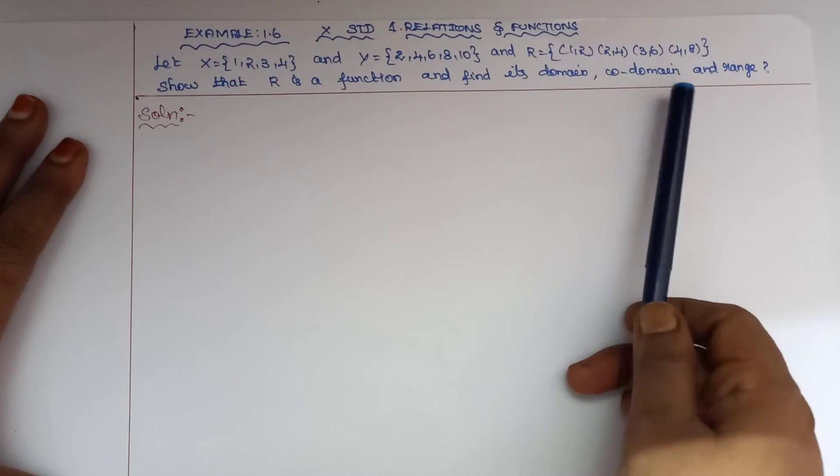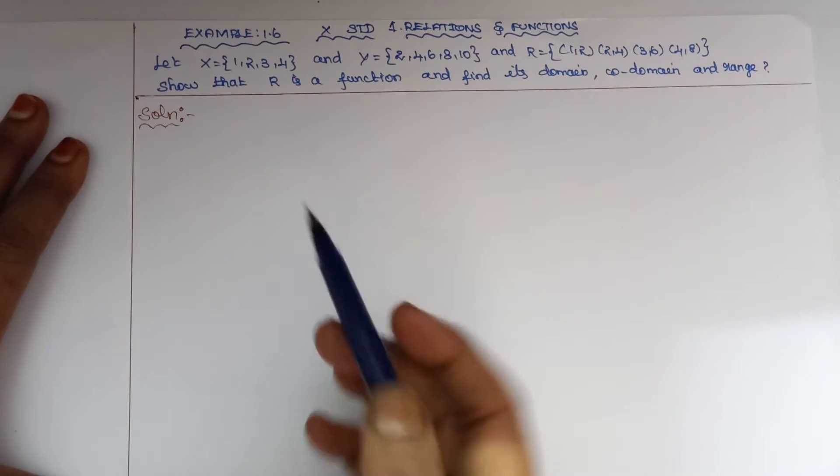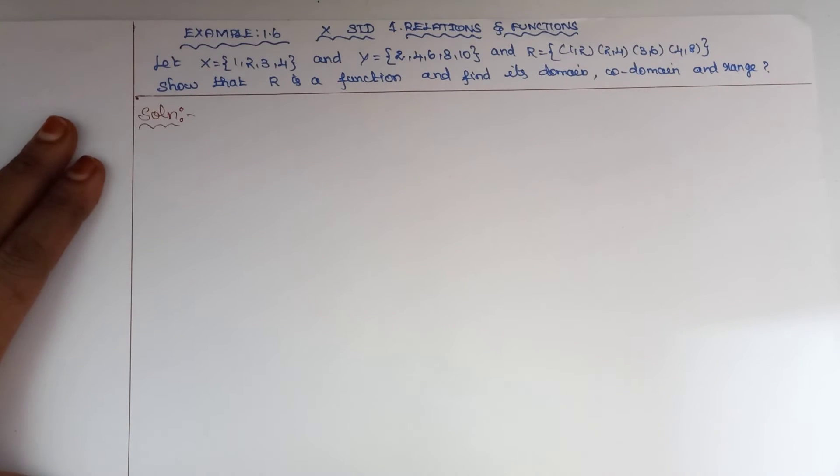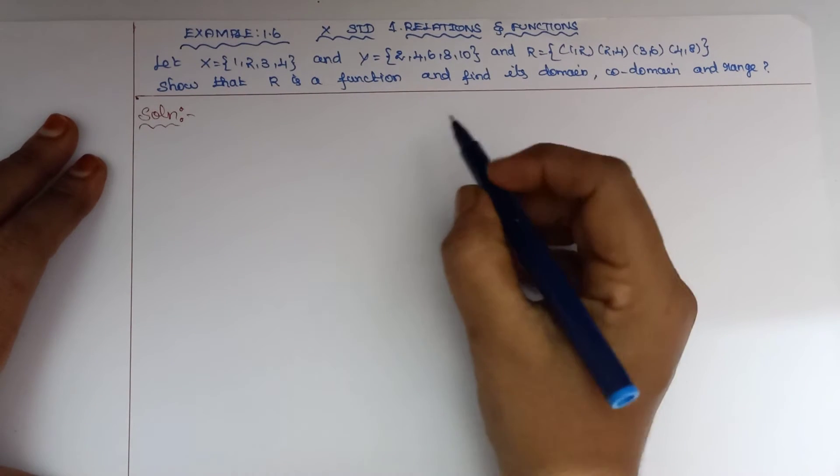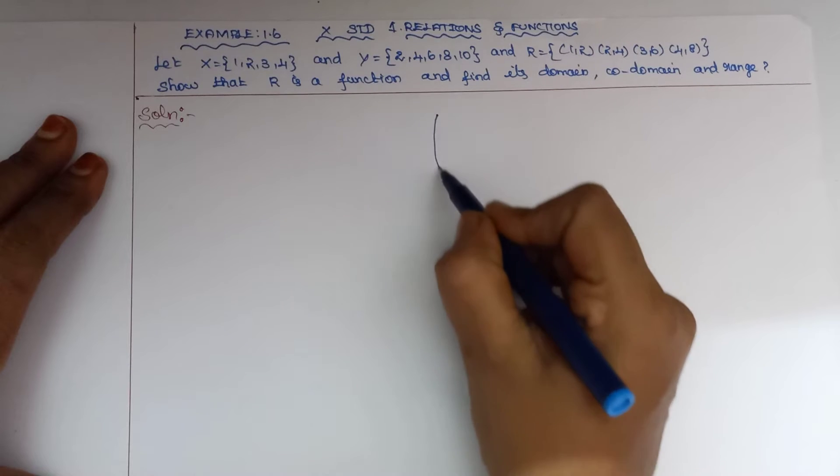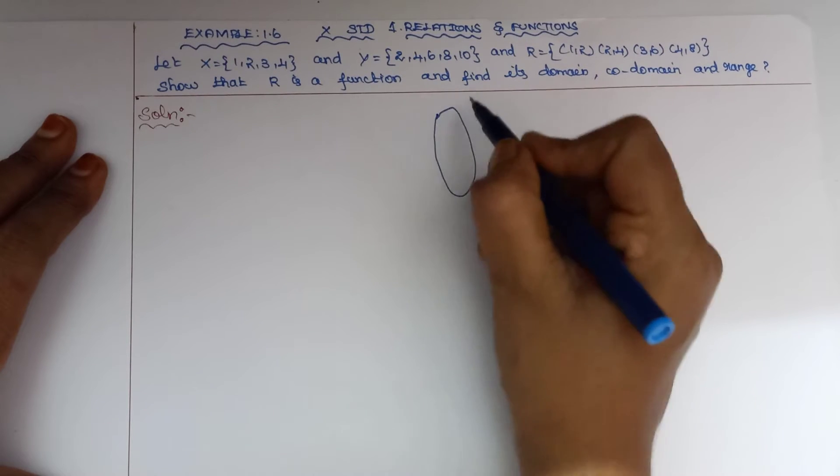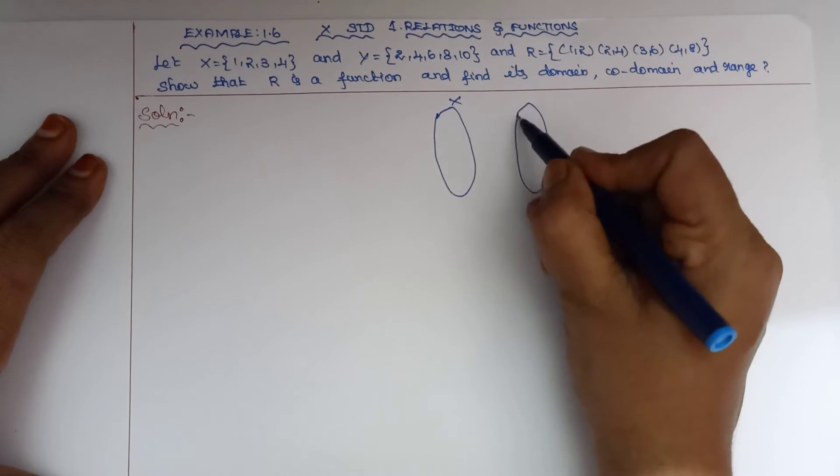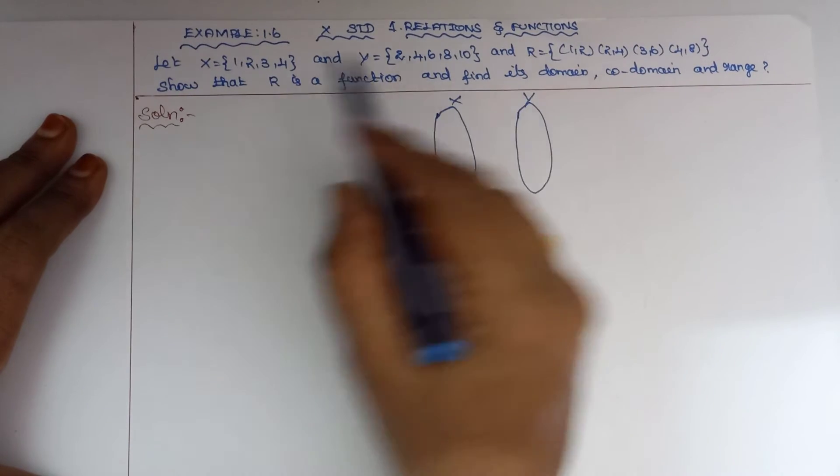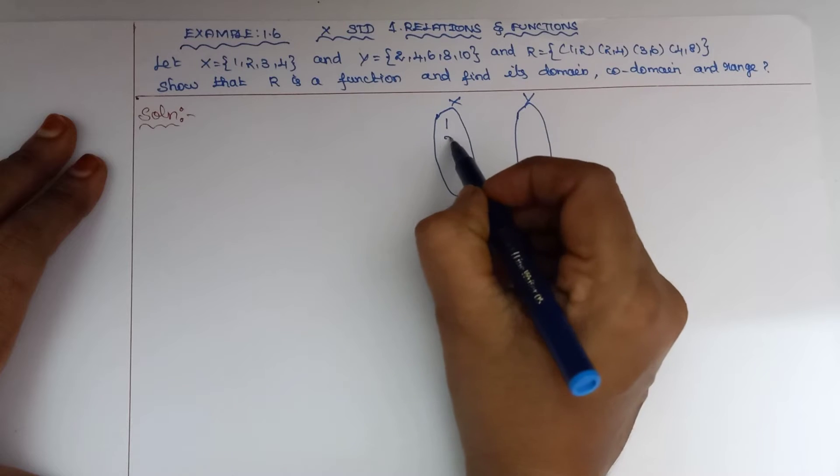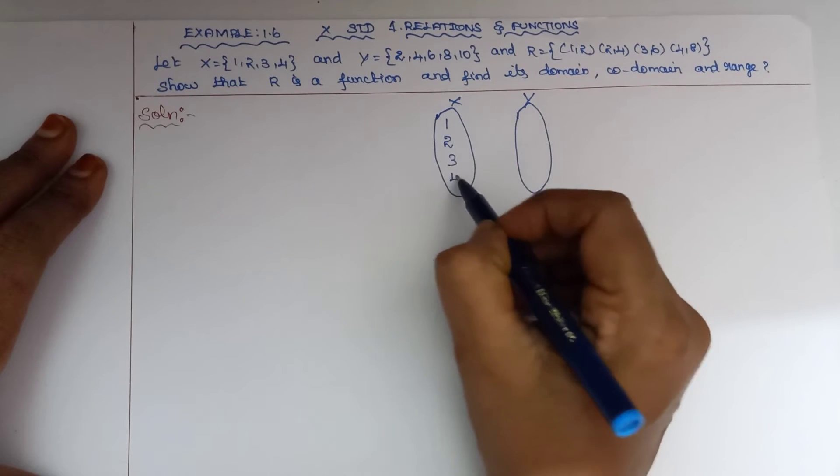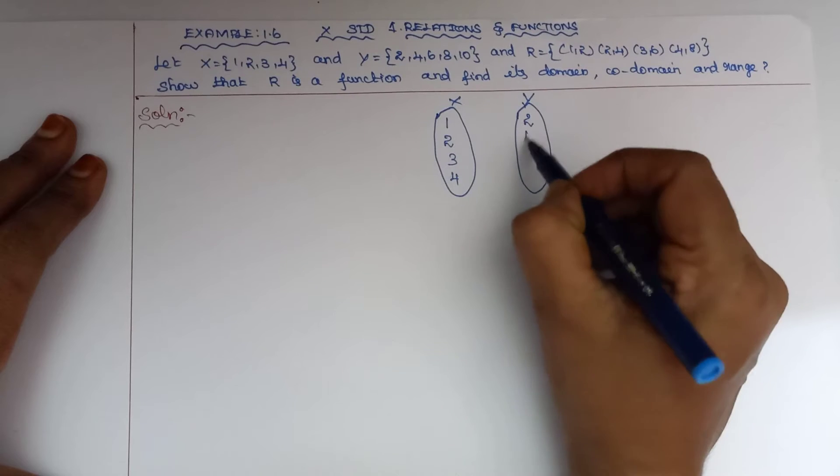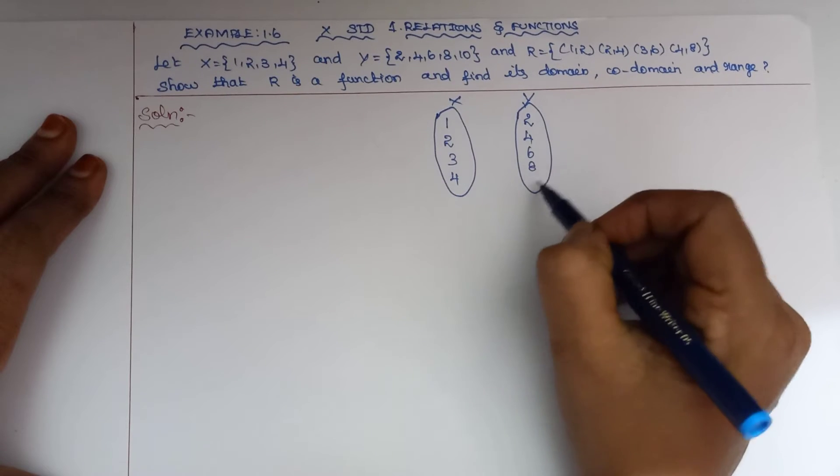To find the solution more easily, I'll express the relation using an arrow diagram. Let me draw the two sets. This is set X and this is set Y. Set X has elements 1, 2, 3, 4 and set Y has elements 2, 4, 6, 8, and 10.